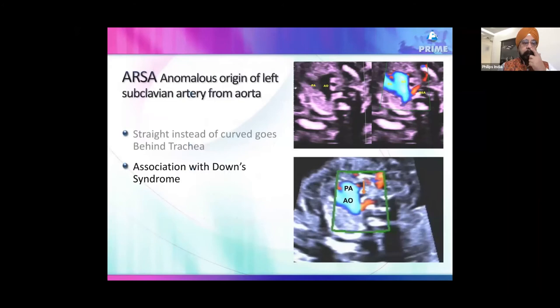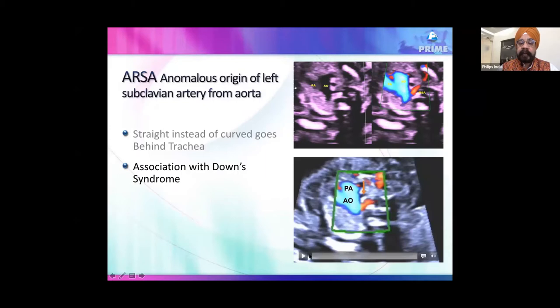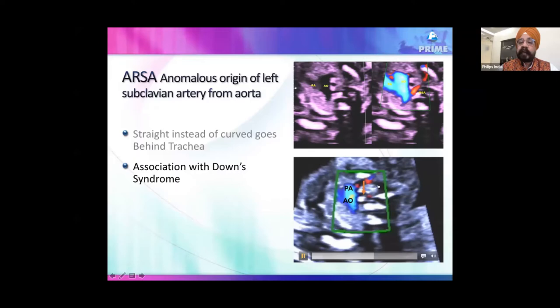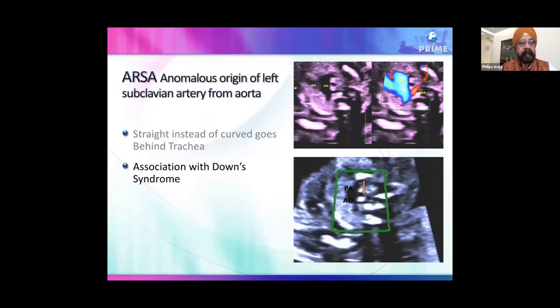Another important finding in the three-vessel view is ARSA — anomalous right subclavian artery — where the right subclavian artery originates from the aorta after the left subclavian artery and crosses behind the trachea/esophagus to the right side. ARSA is benign and rarely causes dysphagia, but its importance is its strong association with Down syndrome. When you see ARSA, further testing is needed to rule out Down syndrome.